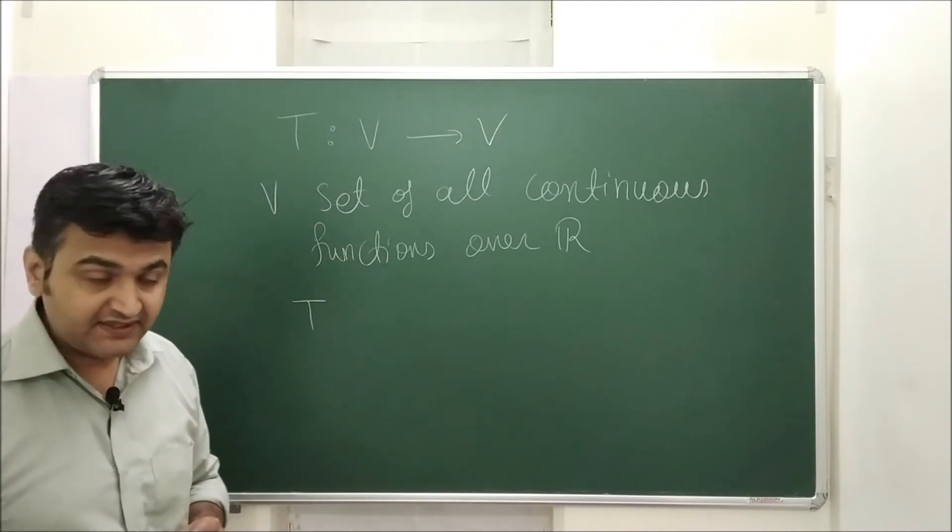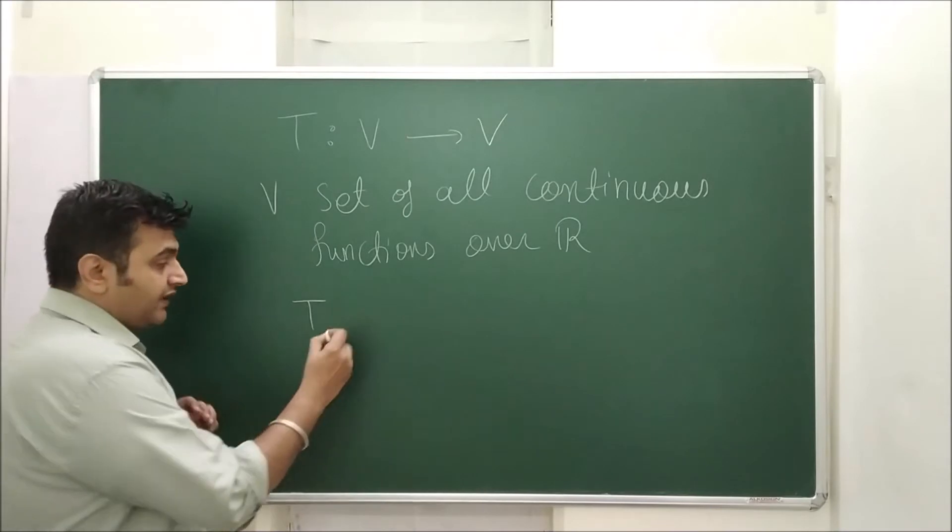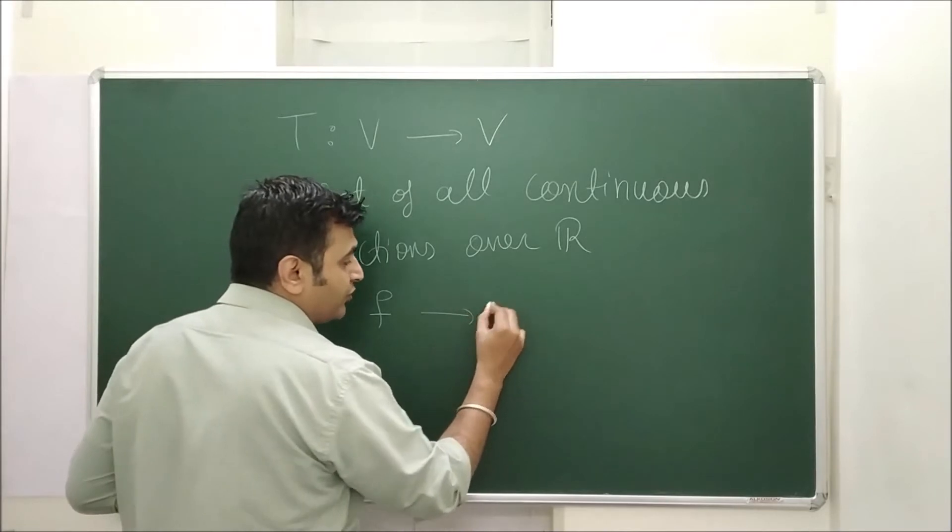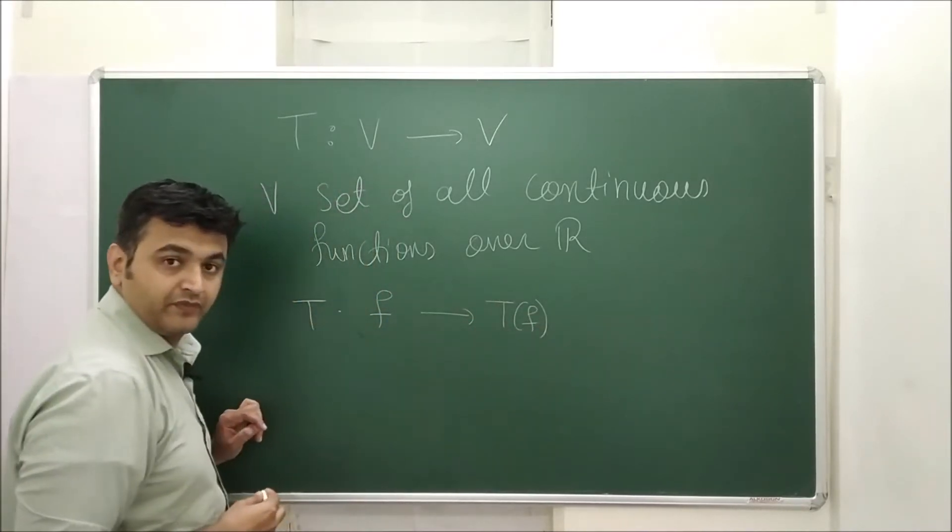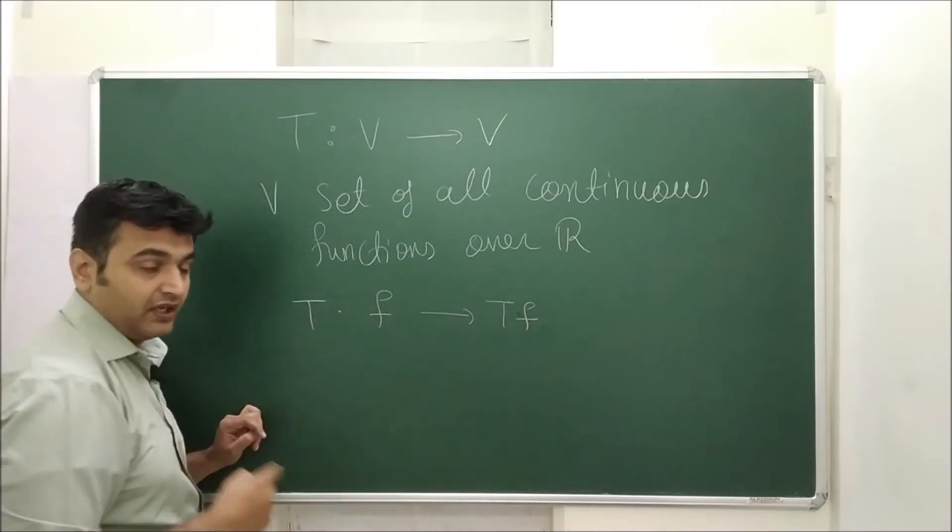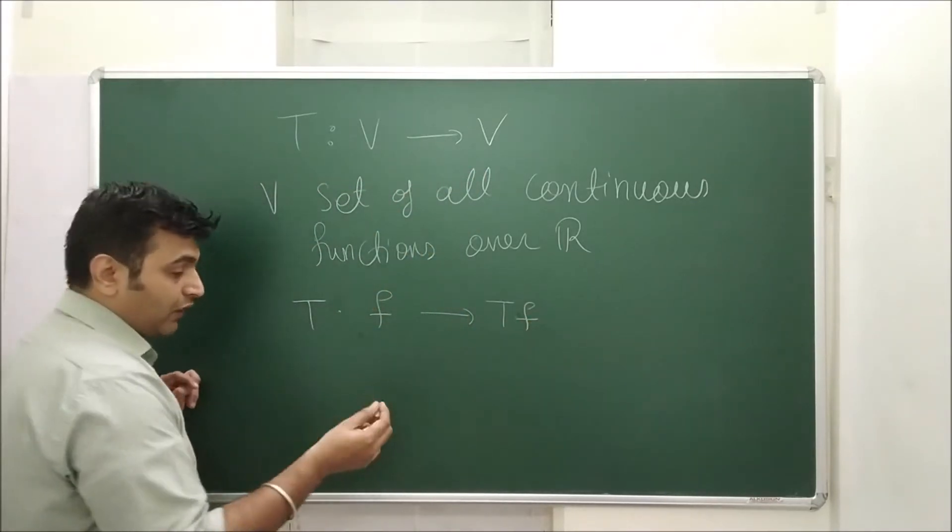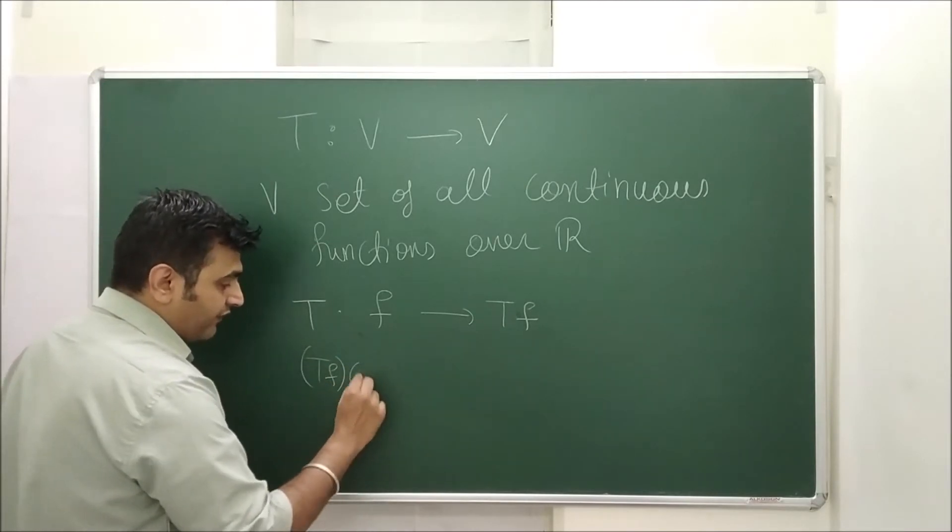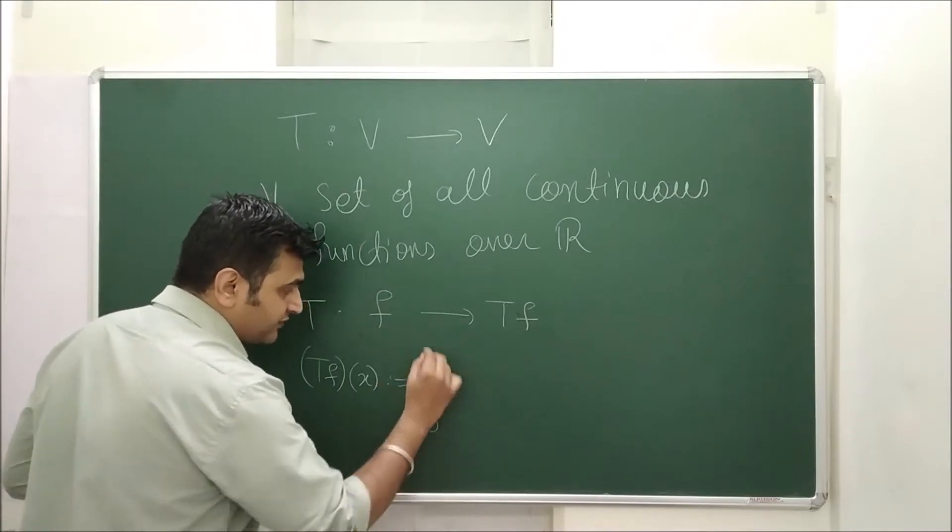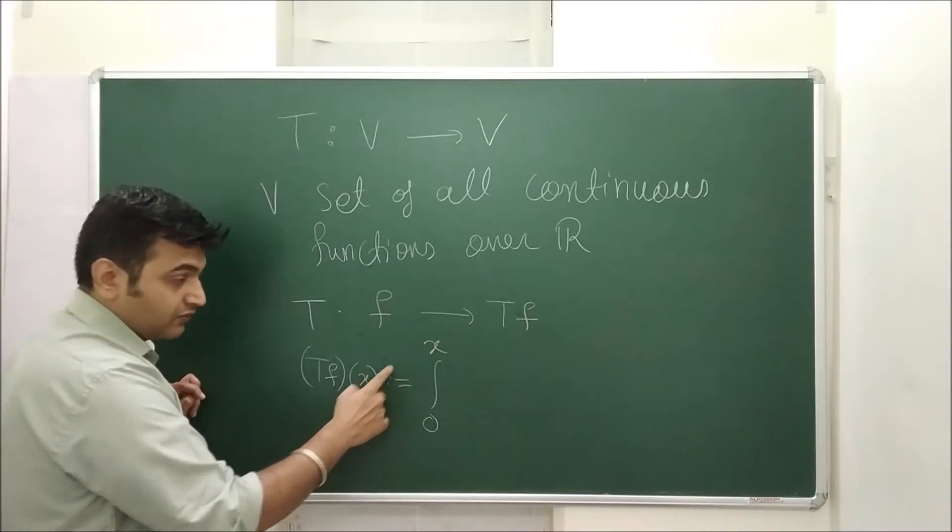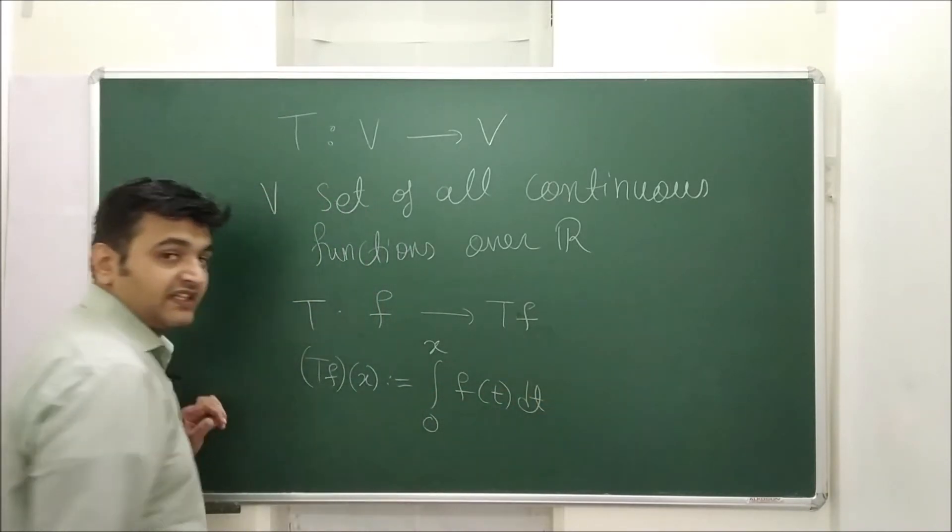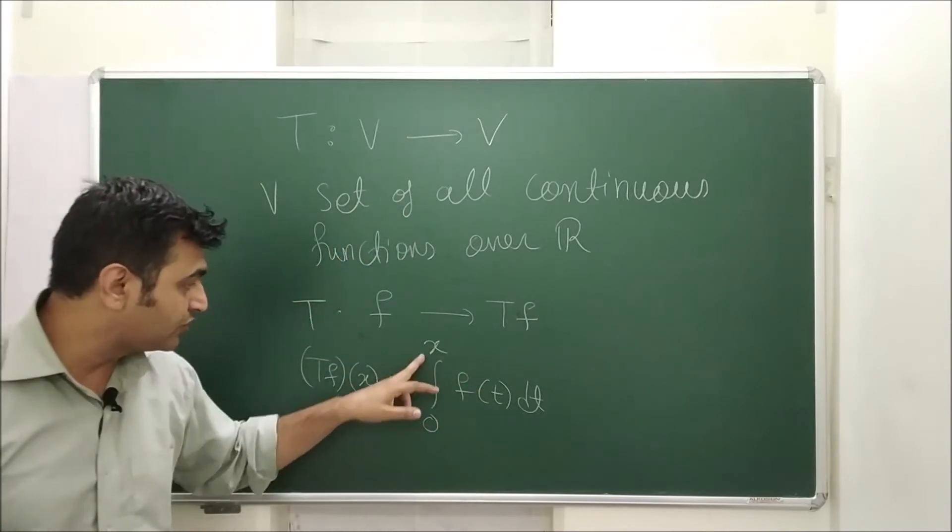We know that this forms a vector space and I'm defining a map t which will take a function as an input, f is a function and what is the output? Output is t of f. Or I will say this is a good way to write. tf is the output in v. Now this is also a function and how I'm defining this function tf f of x is nothing but you simply integrate from 0 to x. So this x goes to x over here and you integrate the function.